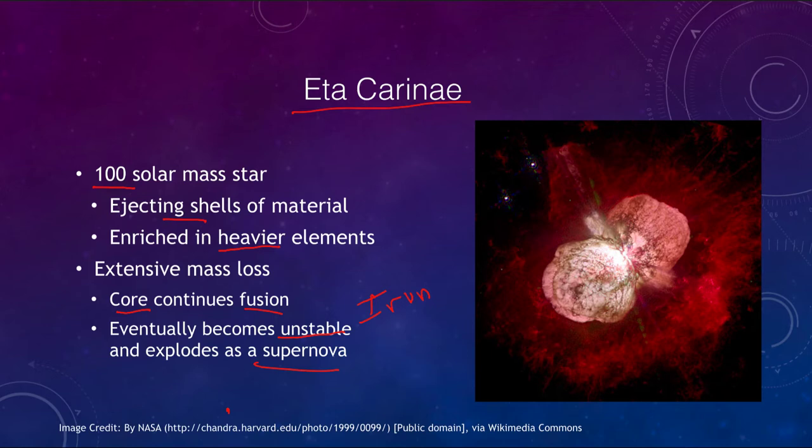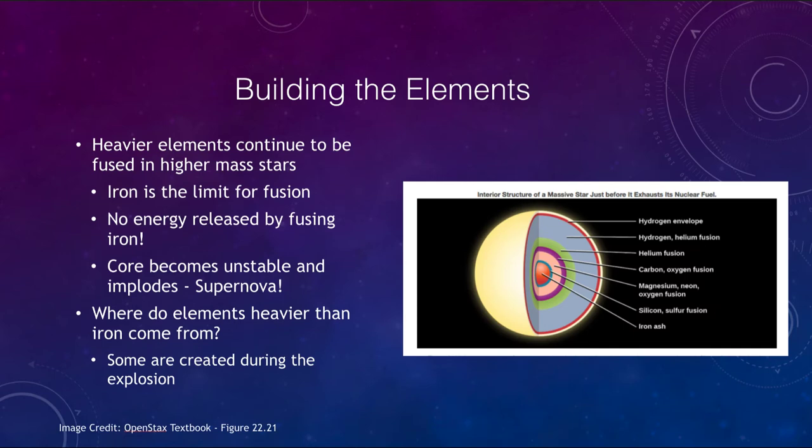So let's look a little bit at how we actually build up the elements by this process. As we saw here, we build up to iron in the core. And this is where a lot of the heavier elements come from. Normally stars fuse hydrogen into helium. These heavier stars are actually fusing up to the iron limit. So iron is that limit. You cannot go any higher than iron when you are fusing materials because no energy will be released.